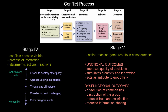We now continue with our conflict process model. We have gone through stages 1, 2, and 3, and now we are getting to stage 4, which covers behavior, and stage 5, which covers the outcomes of the conflict.